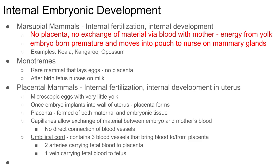Most mammals we're familiar with — humans, dogs, cats — are called placental mammals. Placental mammals have internal fertilization: the male deposits sperm in the female reproductive tract, the sperm fertilize an egg, and the embryo stays inside the female's uterus. It attaches to the wall of the uterus, whose lining has been thickening and forming blood vessels — getting ready for this embryo to implant.